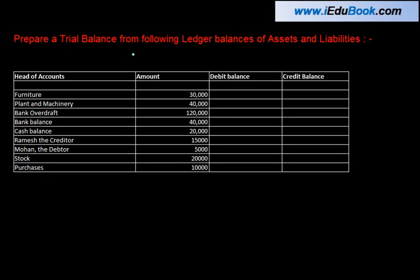Prepare a trial balance from the following ledger balances of assets and liabilities. What this means is that if something is not an asset or a liability, we will exclude it. So let's pick them one by one.